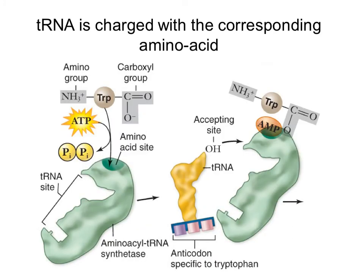Each transfer RNA is matched to its amino acid by the enzyme aminoacyl-tRNA synthetase. This enzyme matches the tRNA to the particular amino acid and joins them together. This is highly specific and is an important part of the translation process, keeping the meaning of the anticodon matched to the particular amino acid.